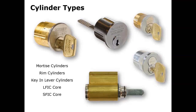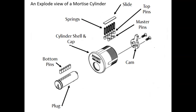The next slide shows an exploded view of common parts of our mortise cylinder. You have the cylinder shell and cap, sometimes called a body; your plug, sometimes called your barrel; cam; and an assortment of pins, slides, and springs.